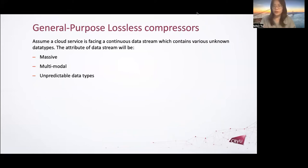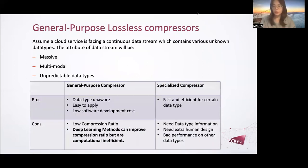We can use a set of specialized compressors to deal with this data stream, but it will need data type information in advance and lots of human design. What is worse is that this system cannot deal with new data types. As for general purpose compressors, the deep learning-based compressors have satisfied compression ratio and are easy to apply, which meet most of our needs. But they have one drawback. Current deep learning compressors are too slow for applications in the real world.